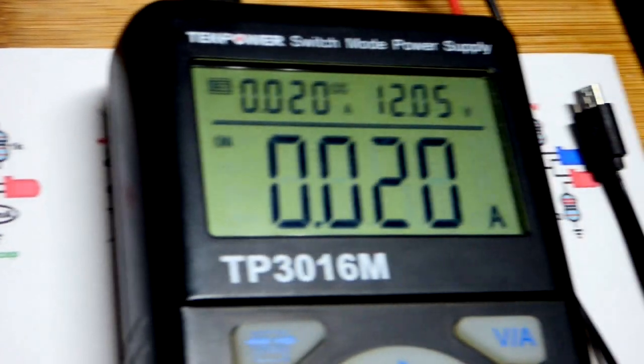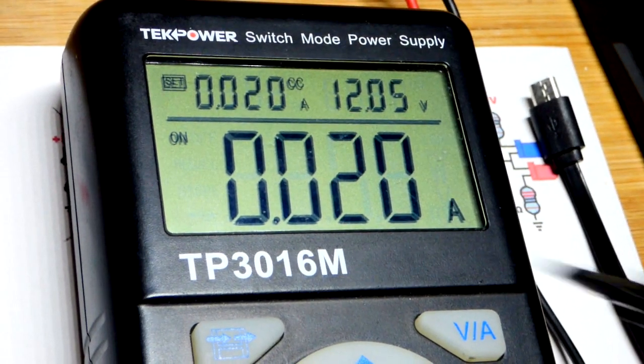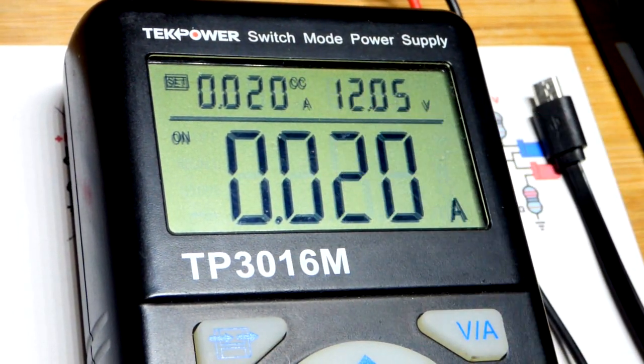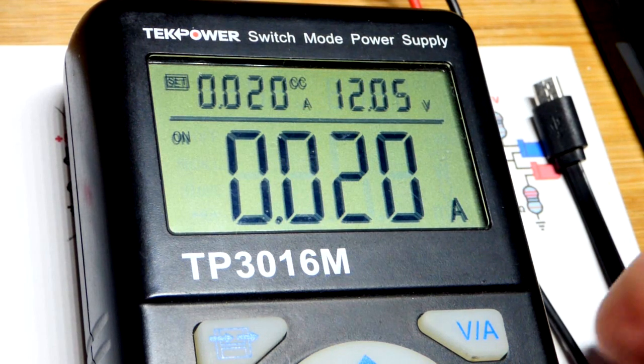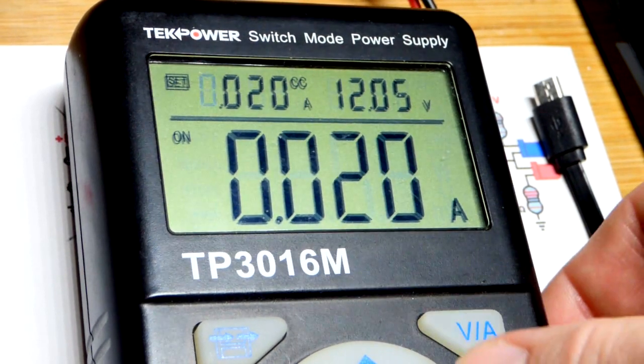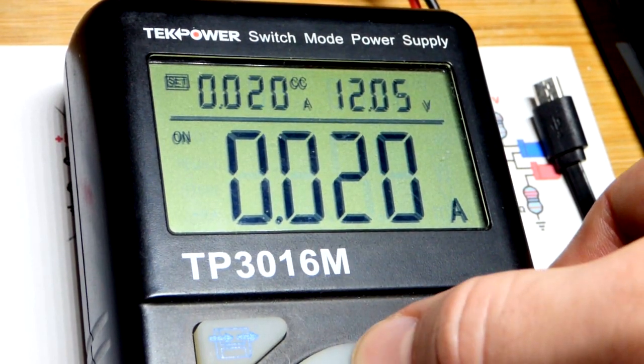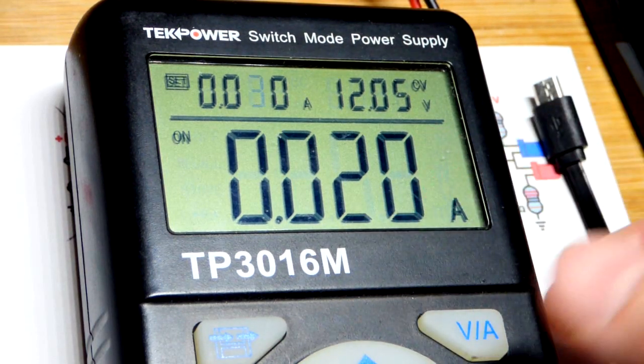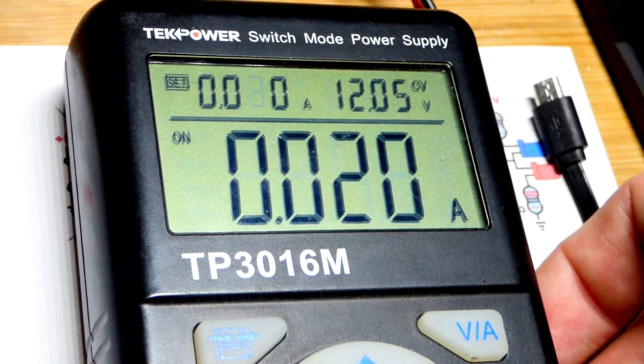So if you need that 20 milliamps, there you can see we got that. Now you can see we got constant current right there. This is preventing the power supply from letting any more than that 20 milliamps of current go. So maybe it was higher than 20 milliamps, you don't know for sure until you set that higher.